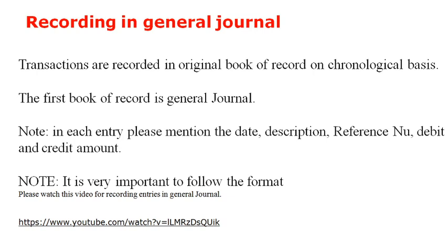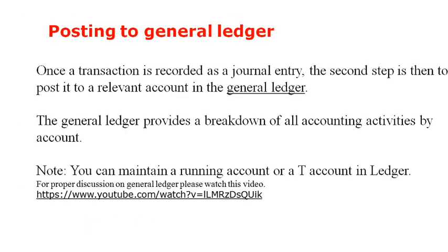When recording in the general journal, you must pay close attention to the formatting. The first column is the date, the second column is the description, then the reference number, then the debit amount and credit amount. Every transaction must be recorded using the double-entry system, meaning the amount credited must also be debited for the same amount. If you are confused about these things, click the link to the previous lecture provided below.